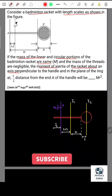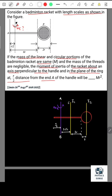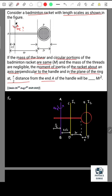This question is about a badminton racket which can be considered a combination of two parts: a rod and a ring. We need to find the moment of inertia about axis AB as shown in the diagram.